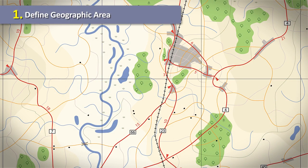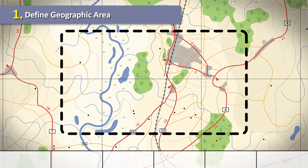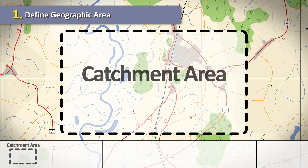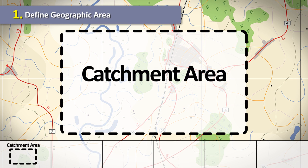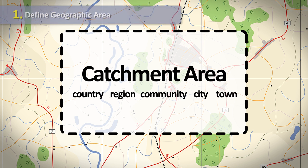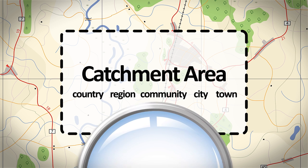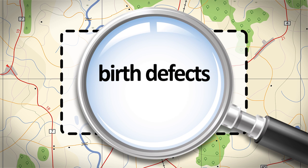The first step is to define the geographic area that your program will monitor. This area of interest is known as the catchment area. It can be a country, a region, a community, city, or town. A population-based birth defect surveillance program will focus on collecting all pregnancies affected by birth defects occurring among a population that lives in the catchment area.